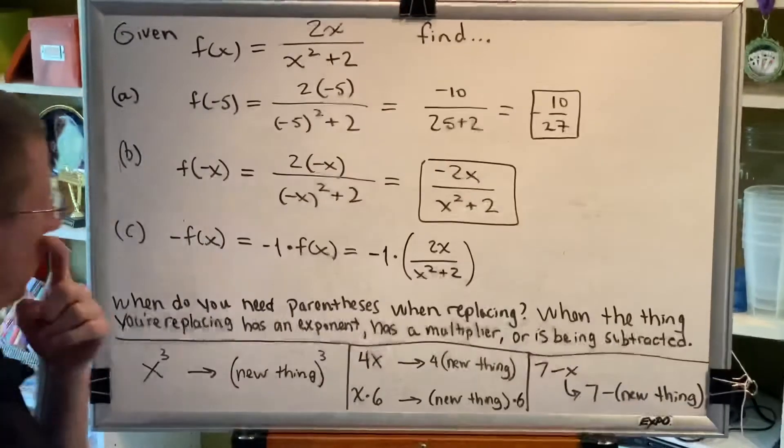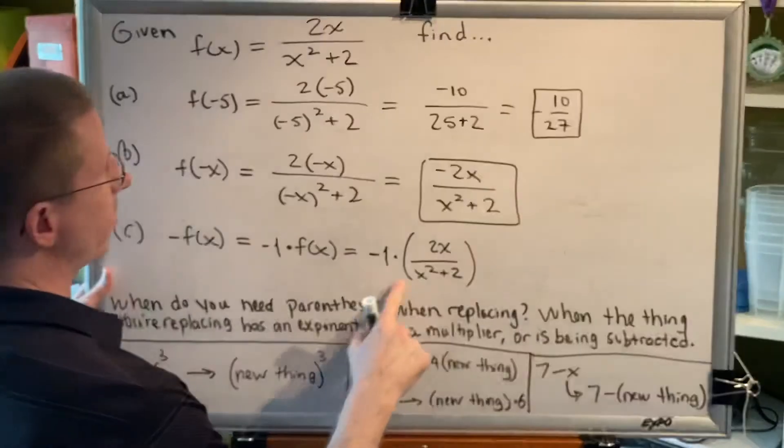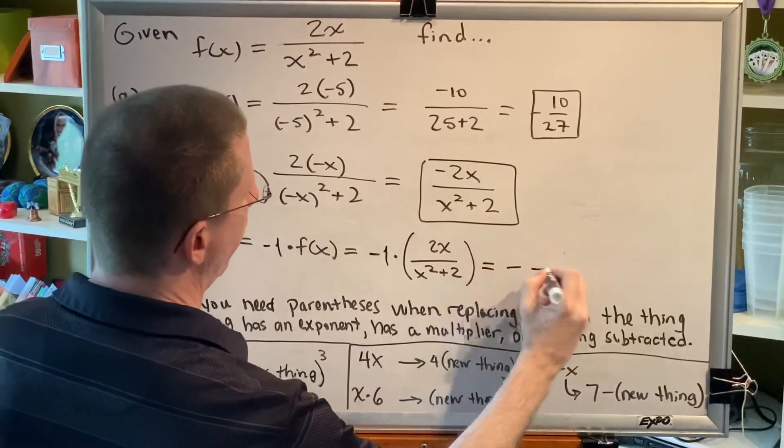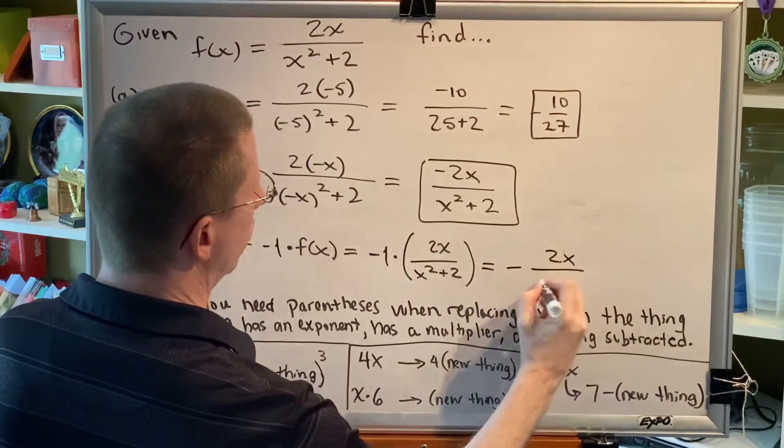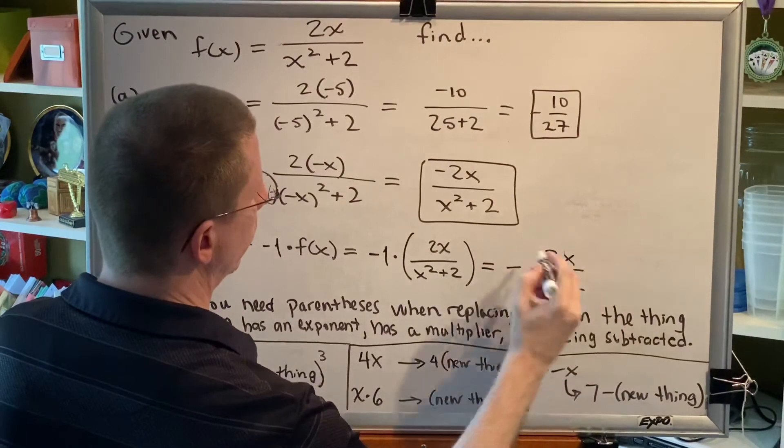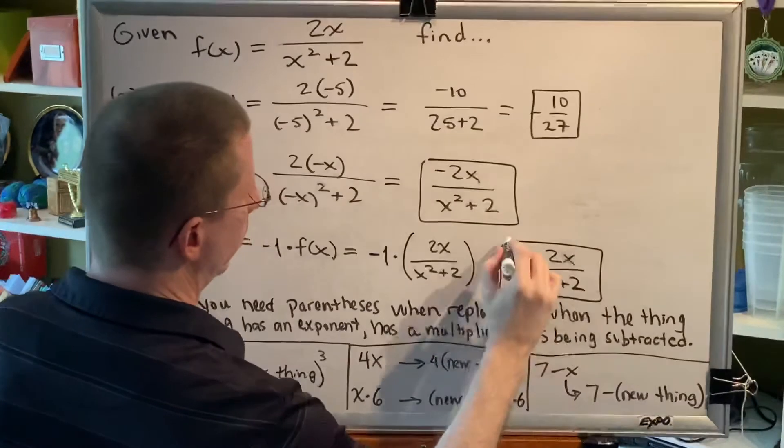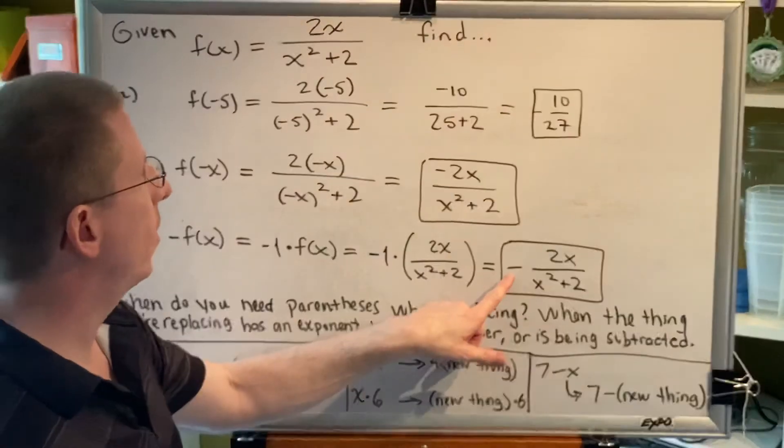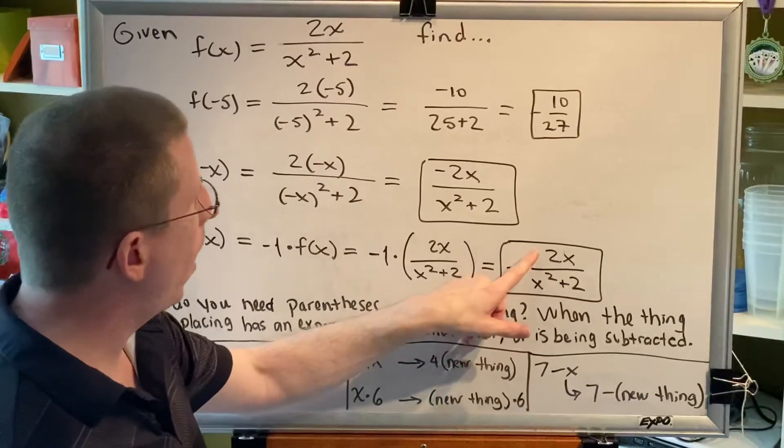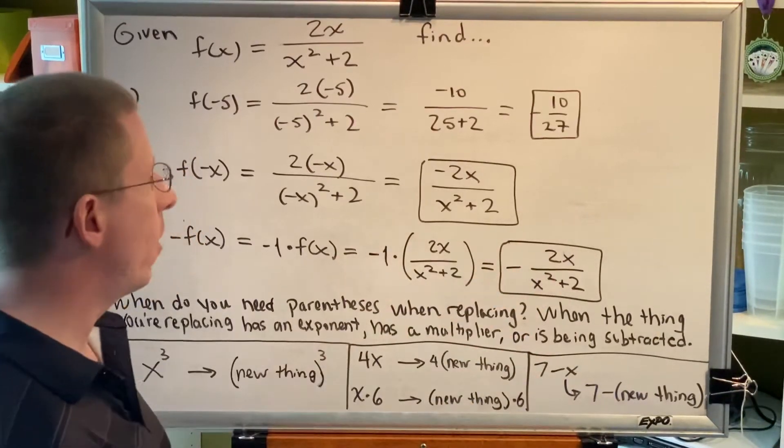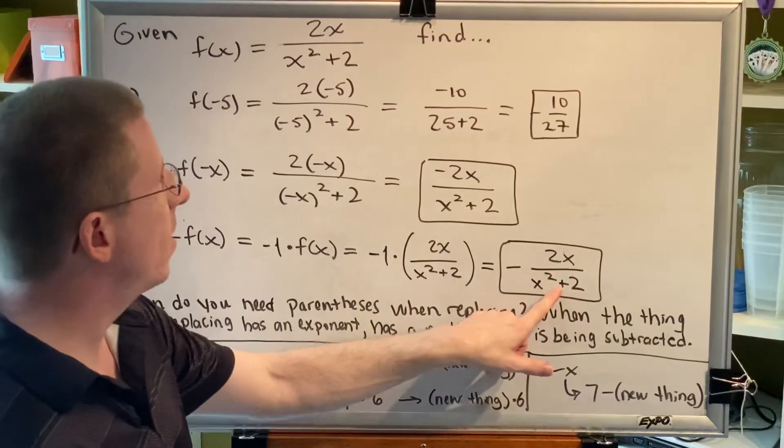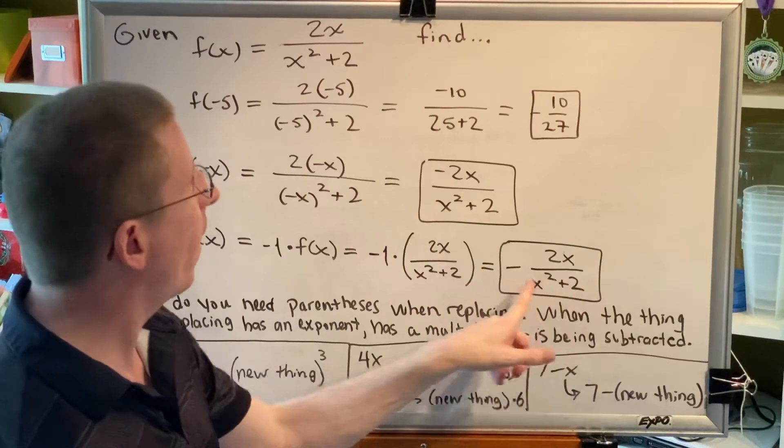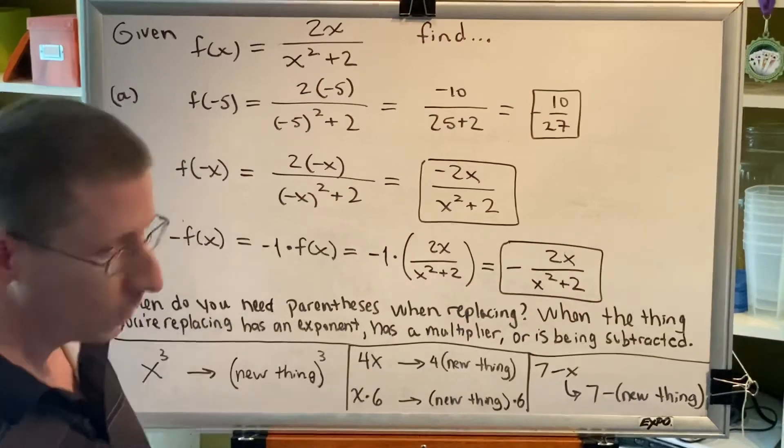Now, in this particular instance, these parentheses are not necessary because of the fraction, and so we're simply going to write this as our final answer. When a fraction is negative, this negative can be to the left of the fraction, or up in the numerator, or down in the denominator. If you choose to put it down in the denominator, then the x squared plus 2 would have to be parentheses, so that the negative affects the entire denominator.